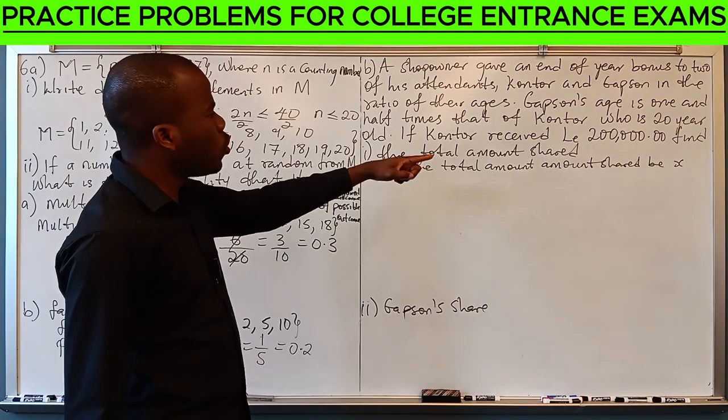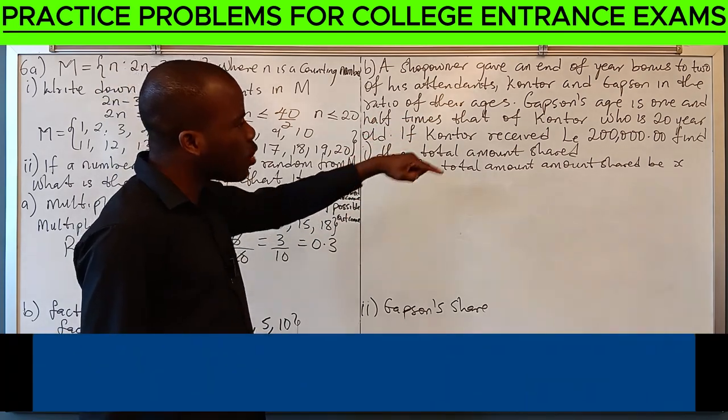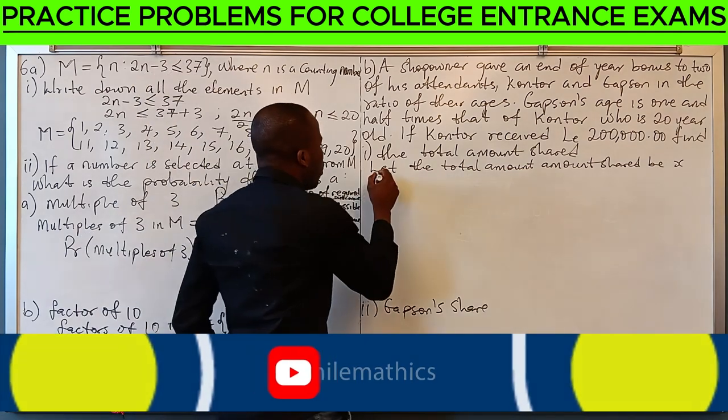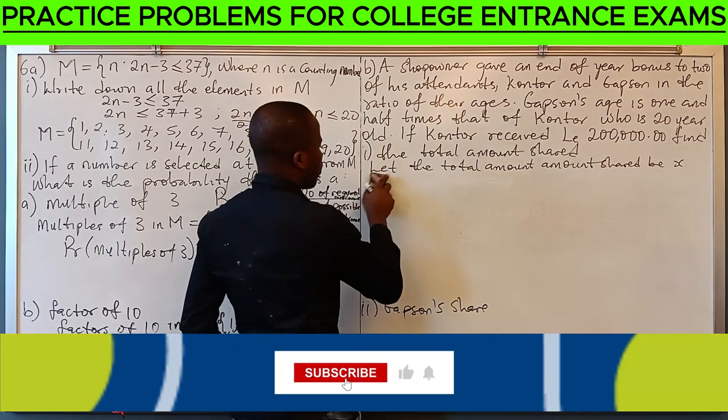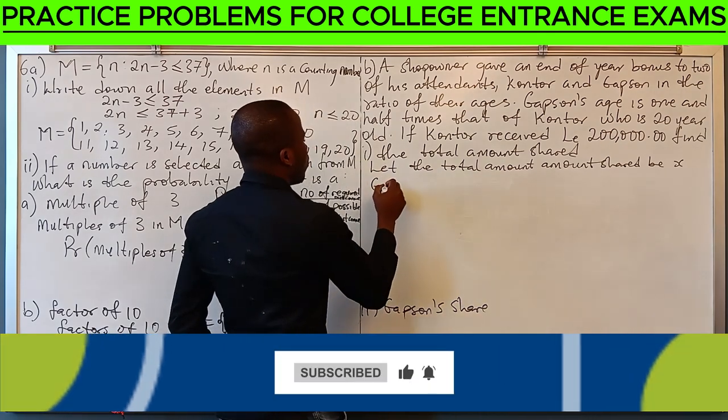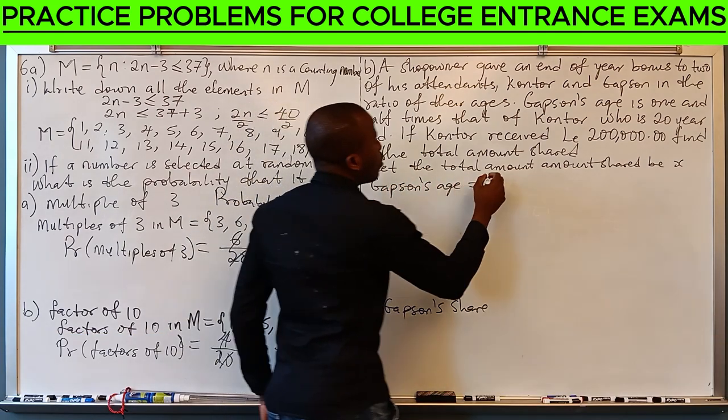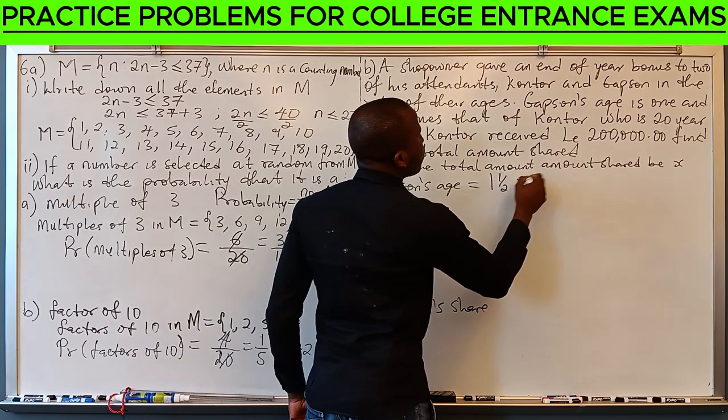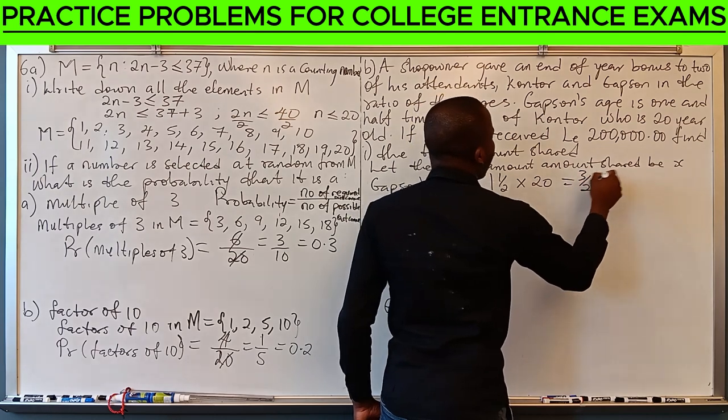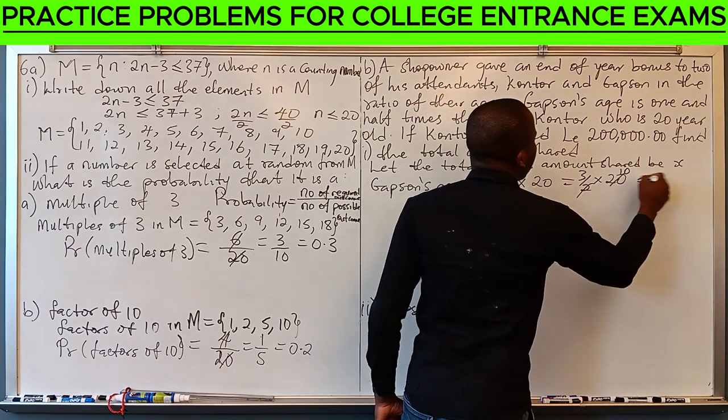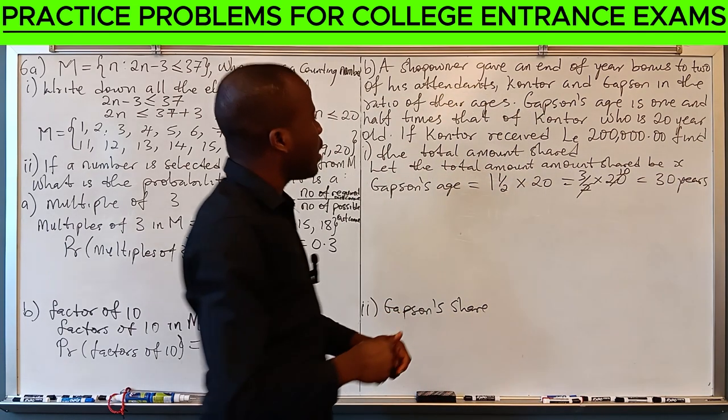The next thing we'd like to do is to find Gapsen's age, who is one and a half times that of Cantor's age, who is 20 years. So, Gapsen's age is one and a half times 20, which is 3 over 2 times 20. This is 3 times 10, which is 30 years old.